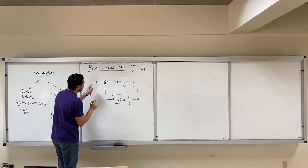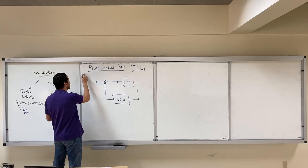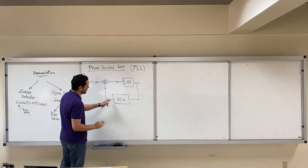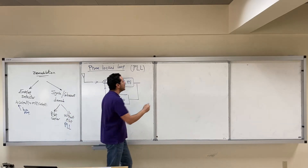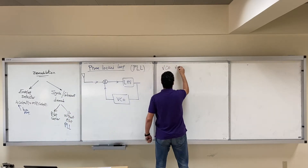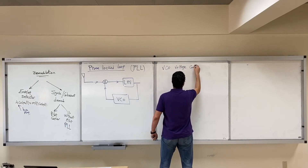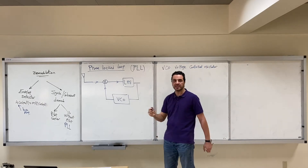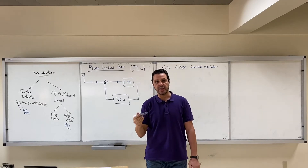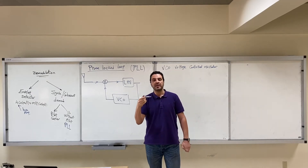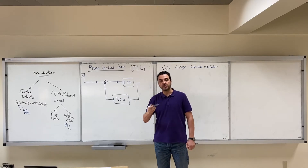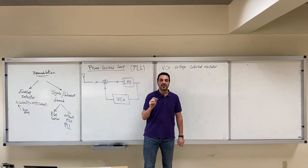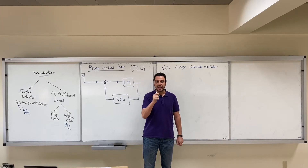The input signal, which is the signal coming from the antenna, enters the Phase-Locked Loop, along with a signal coming from the voltage controlled oscillator, the VCO. The VCO is an oscillator — it produces a sinusoidal signal. Voltage controlled means it is an oscillator whose frequency is controlled by its input voltage, so the frequency output is determined by the input voltage to it.